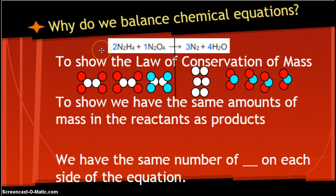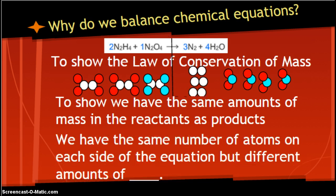The real reason that we balance our chemical equations is to show the law of conservation of mass. In other words, to show that we have the same amounts of mass in the reactant as the product. Because in chemistry, we can't create or destroy anything. We simply change form. We have the same number of atoms.